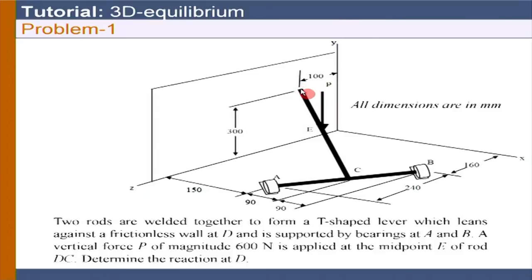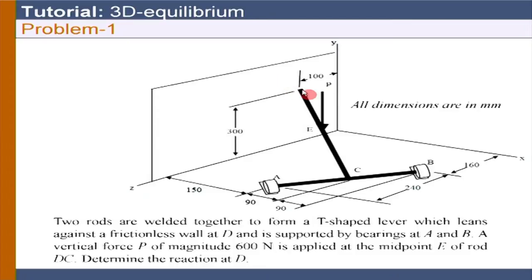Study the problem again and let me know if there are any queries. It is supported on bearings, so we know how many reactions there are, and we can clearly see what needs to be done to find the reaction at D. The reaction coming from this wall is along the x-axis, so that is dx.